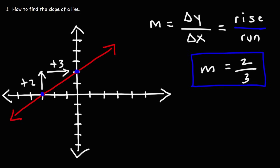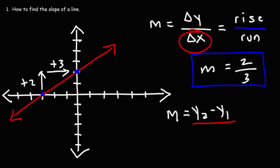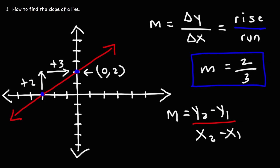The other way to calculate it is to find two points on a line and use the formula M equals the change in Y, which is Y2 minus Y1, divided by the change in X, which is X2 minus X1. This point here — the Y intercept — has an X value of 0 and a Y value of 2.